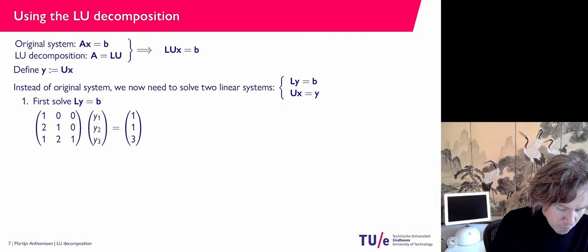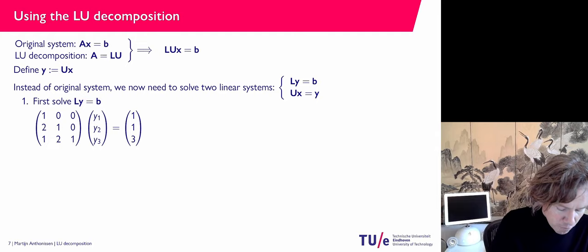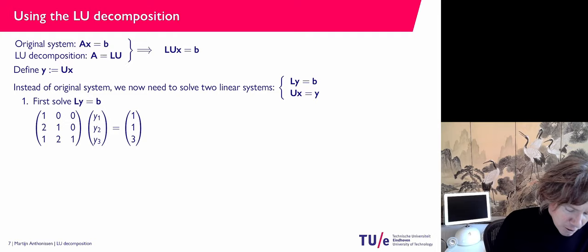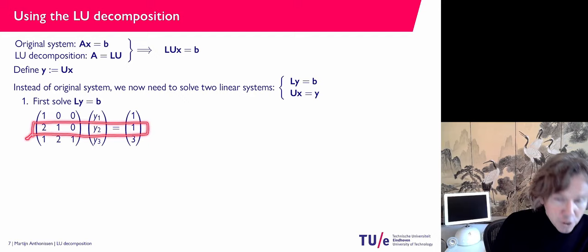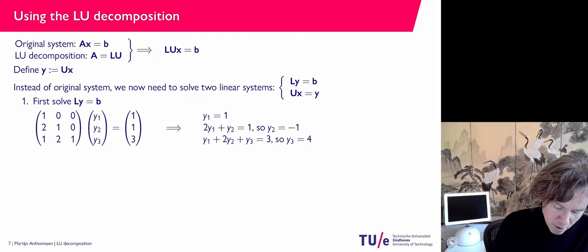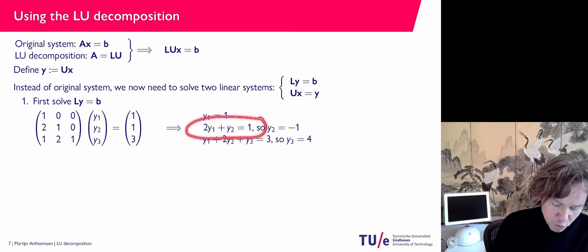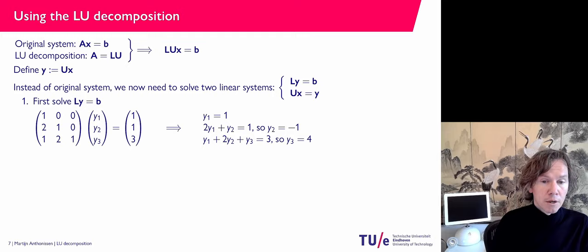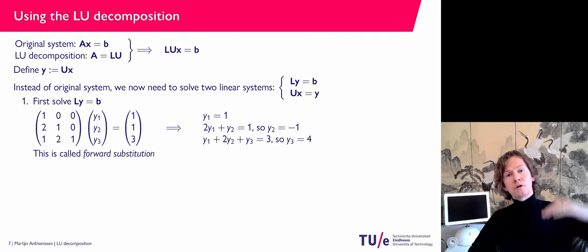If we look at Ly equals b with our L matrix, the first row tells us that y1 equals one immediately. The second equation involves two times y1 plus y2 equals one — since y1 is already known, we can find y2. Then from the last equation we can find y3. This process, starting at the top and substituting values into the next equation, is called forward substitution.